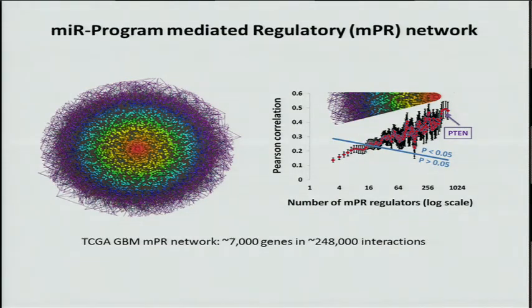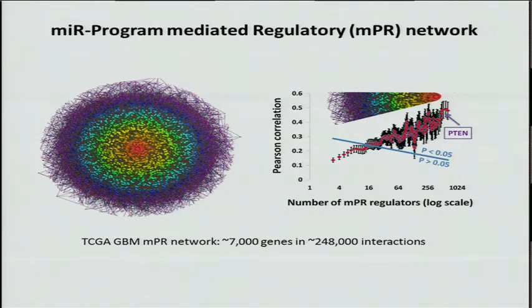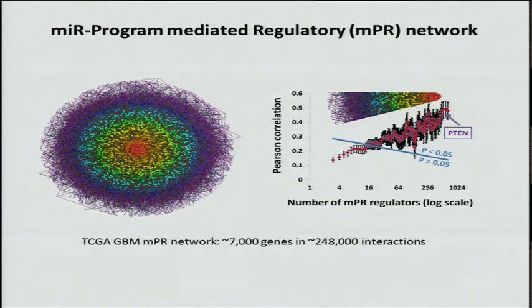When we did a genome-wide scan, we were amazed to see a huge number of interactions. On the left is a visualization of the network we predicted — about a quarter million interactions involving about 7,000 genes. Not only is this RNA-RNA network, which we call the NPR network, large, but the forces exerted by these interactions are also unexpectedly large. On the right, you can see that these forces depend on the size of the neighborhood: as the number of regulators for a gene increases, so does the correlation between the regulators and the target, approaching a Pearson correlation of about 0.6. PTEN, which we mentioned before, is way at the right.